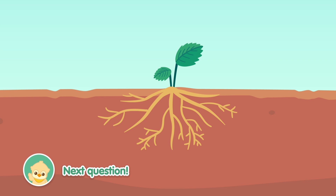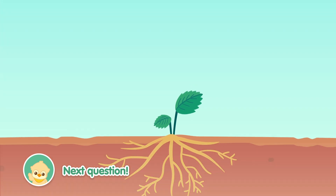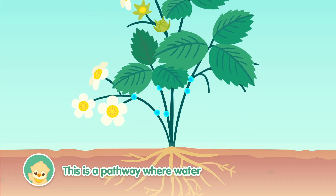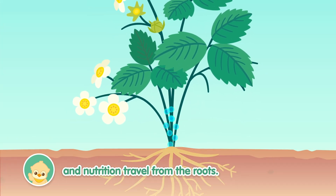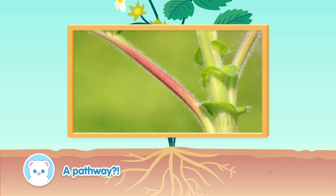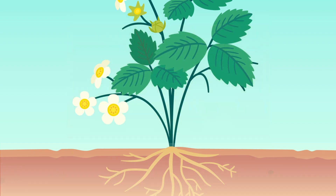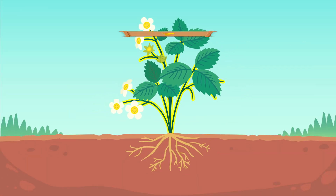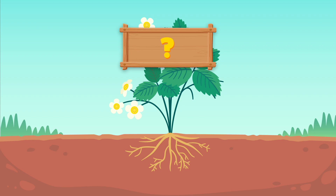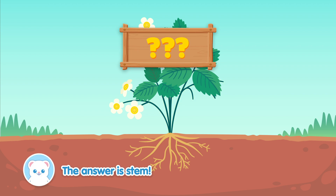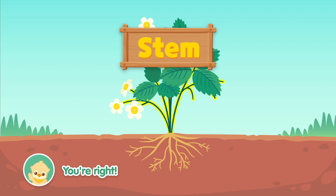That was an easy one. Next question. This is a pathway where water and nutrition travel from the roots. A pathway? I know! The answer is stem! You're right!